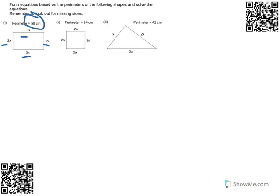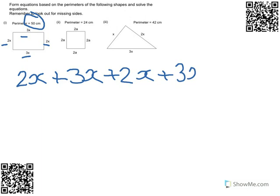We're told that the perimeter of that shape the whole way around is 50. So we need to form an equation from this information. We know that if we add up all four sides it should be 50cm. So that's 2x plus 3x plus 2x plus 3x. Adding up all four sides should get 50cm, so it should equal 50cm.